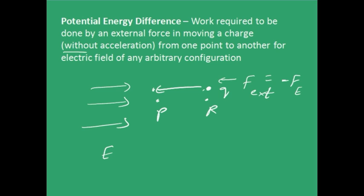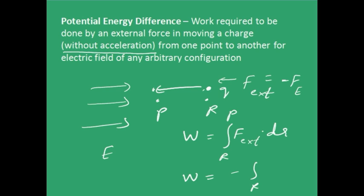You should bring the charge very, very slowly — that is, without acceleration; it should be infinitesimally slow. Now if you perform this action, the work done by the external force would be the external force into displacement from R to P. This would be the same as the electrical force, because the external force is nothing but the opposite of the electrical force. Note that this work done by the external force will be stored as the potential energy when the charge is at P, and this is the change in potential energy when the charge is at these two places P and R.